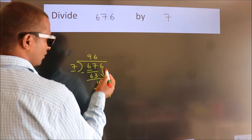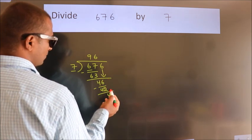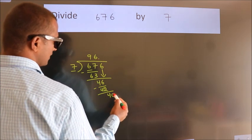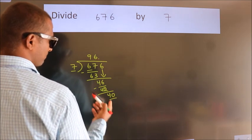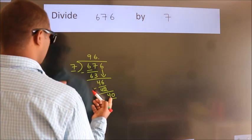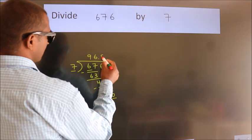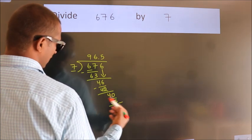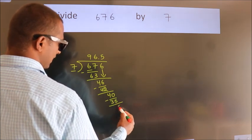After this, no more numbers to bring down. So what we do is put a dot and take 0. So 40. A number close to 40 in the 7 table is 7 times 5 equals 35. Now we subtract. We get 5.